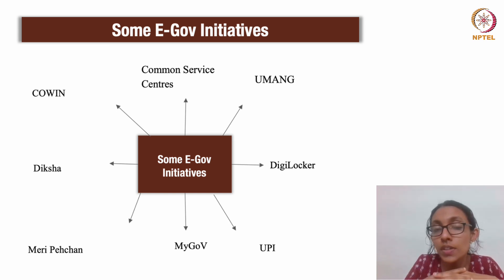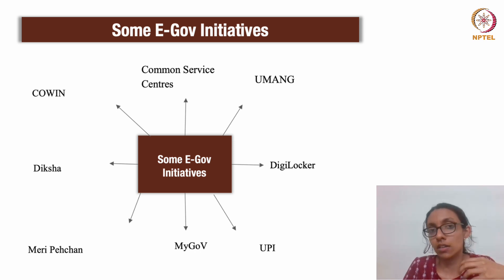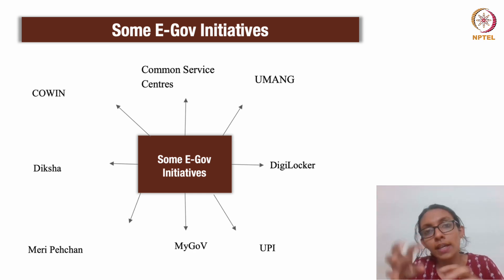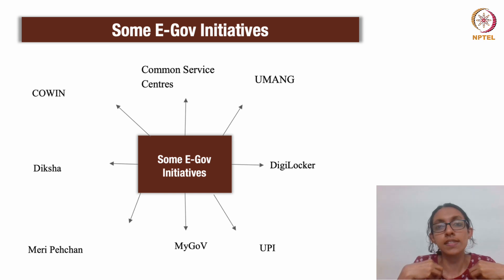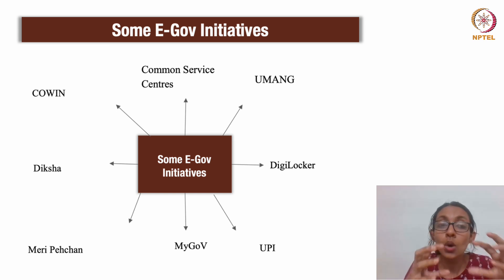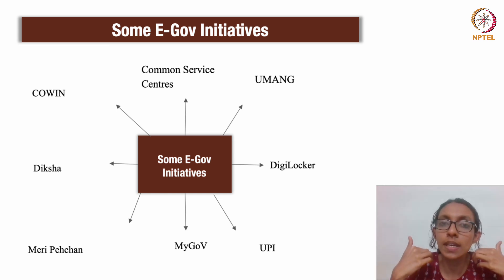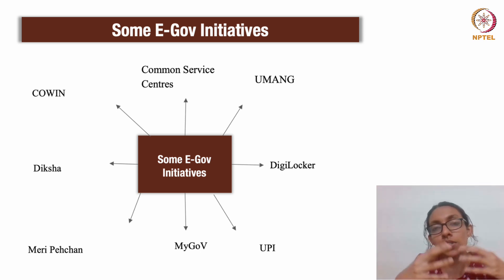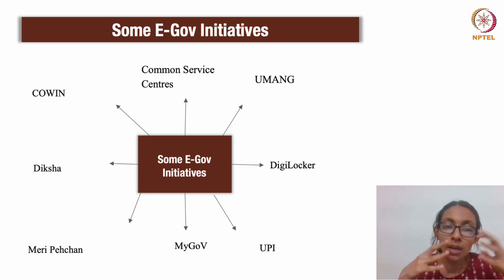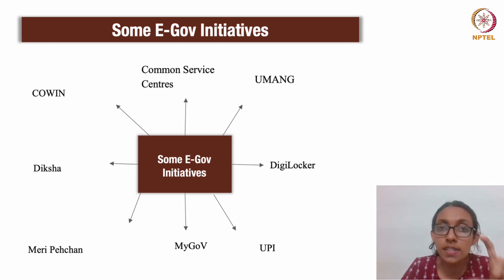UPI, or the Unified Payments Interface, is an app that helps you make money transfers in a cashless mode. We also have MyGov — a platform which helps citizens provide their own inputs for governance. Citizens can make posters and submit their vision and ideas for how the country should be run to the government, allowing the government to understand citizens' expectations and ideas. Meri Pehchaan is another initiative which helps users access a lot of services with a single set of credentials.